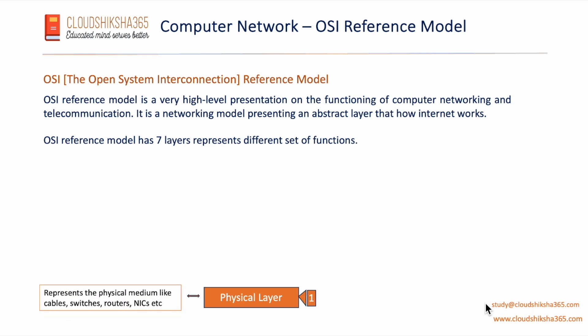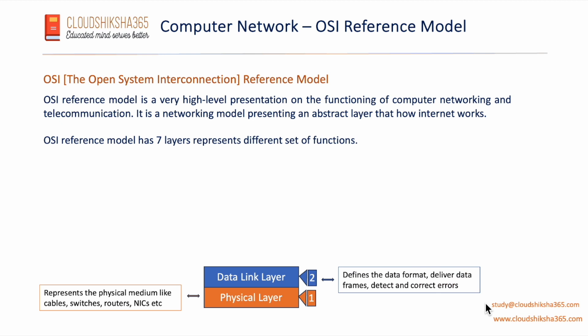The physical layer represents the physical medium like cables, switches, and routers. The next layer is the data link layer. The data link layer defines data format, delivers data in the form of frames, and detects and corrects errors. It has two sub-layers: Logical Link Control (LLC) and Media Access Control (MAC). These sub-layers send and receive data based on MAC addresses. Based on those MAC headers, data is forwarded toward the upper layer — the network layer. Error control, flow control, and access control also happen at the data link layer.